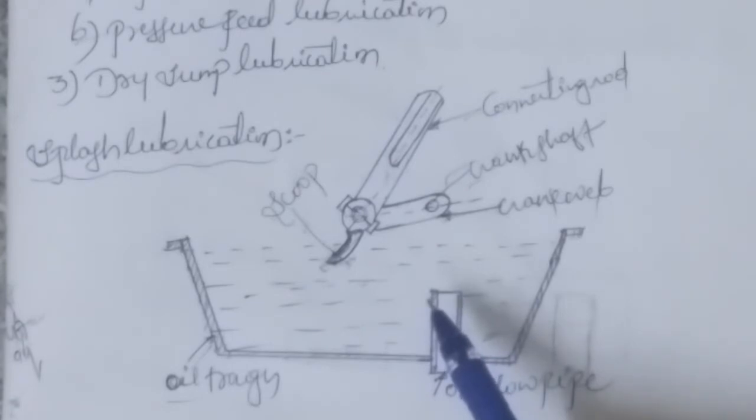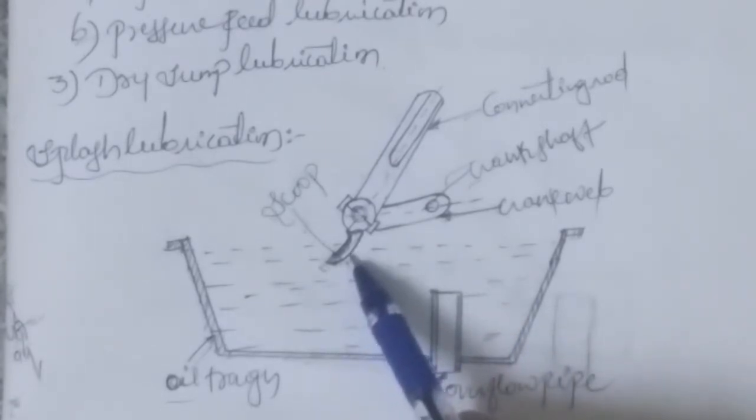This type of lubrication system was used in early motorcycles. The lower end of the connecting rod consists of a scoop-like structure.